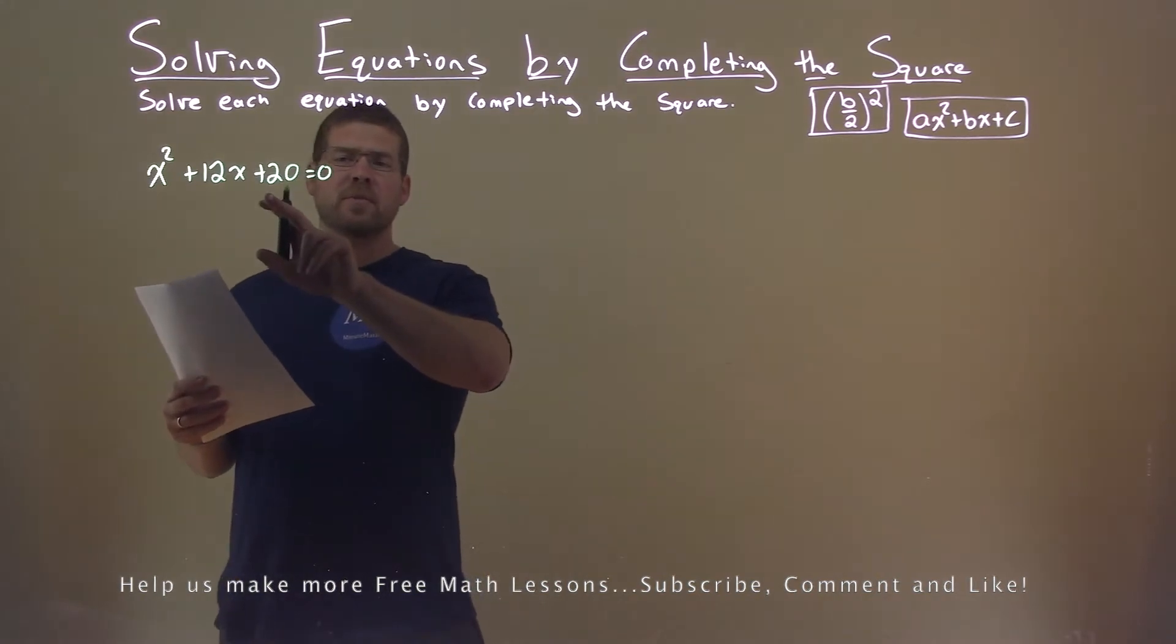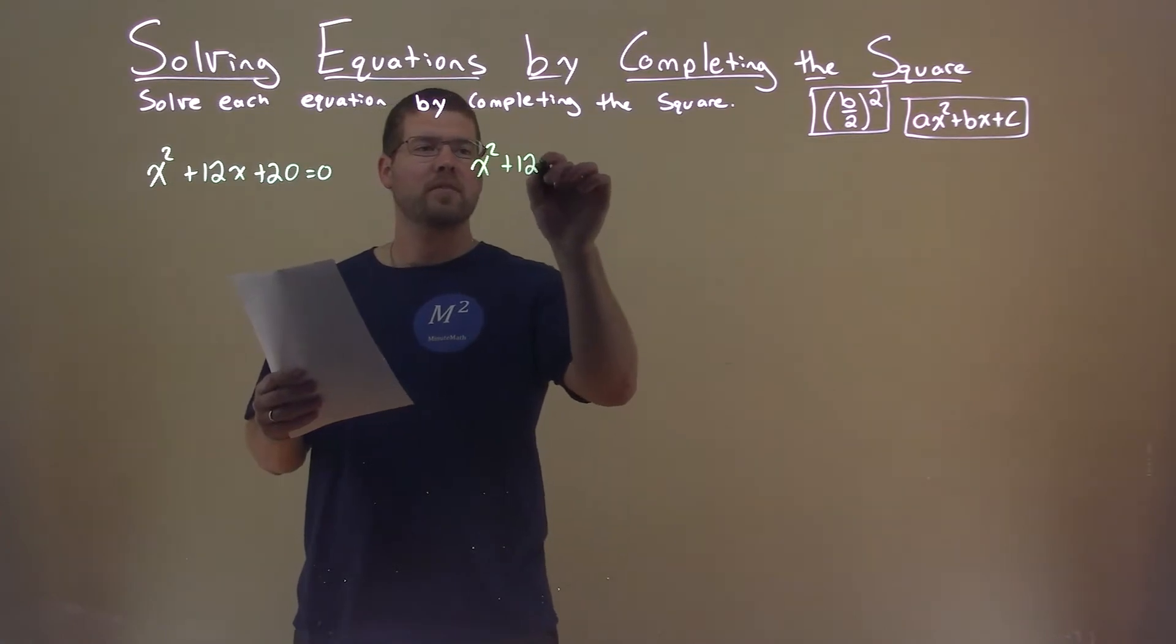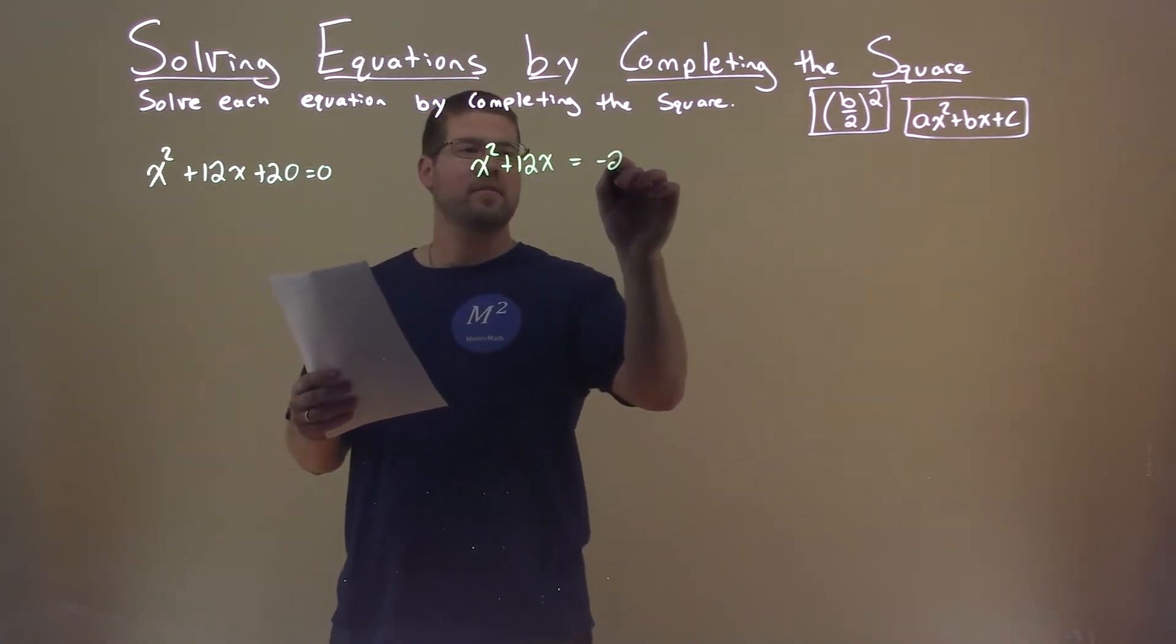First thing I'm going to do is subtract 20 from both sides of the equation. That gives me x squared plus 12x equals negative 20.